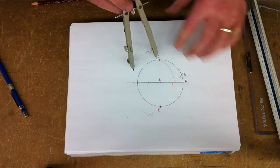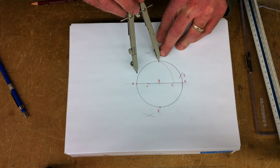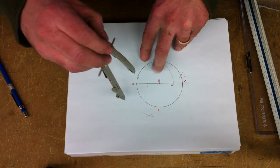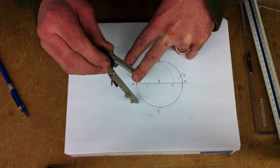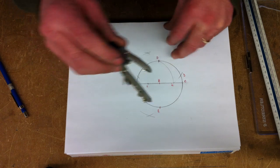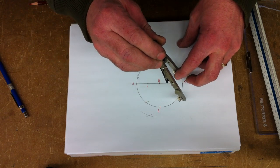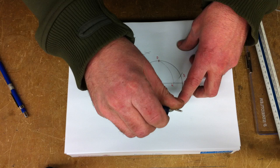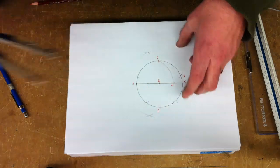We should be able to fairly accurately, of course there's always some room for error, scribe five equal points around the edge of the circle. That's fairly close.